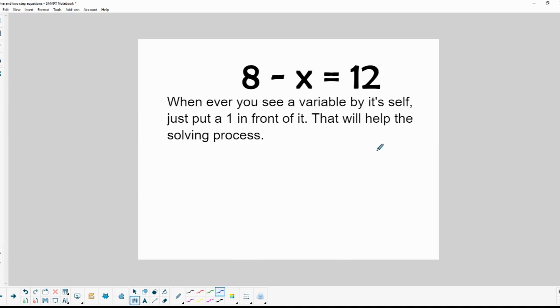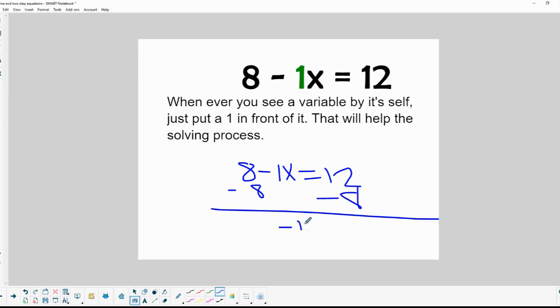Now when you're doing a problem like this, whenever you see a variable by itself, just put a 1 in front of it like this. And then solve the equation. So you got 8 minus 1x equals 12. And you're going to subtract 8 from both sides. And you'll end up with minus 1x equals 12 minus 8, which is just 4. And when you divide by negative 1, you just end up with x equals negative 4.